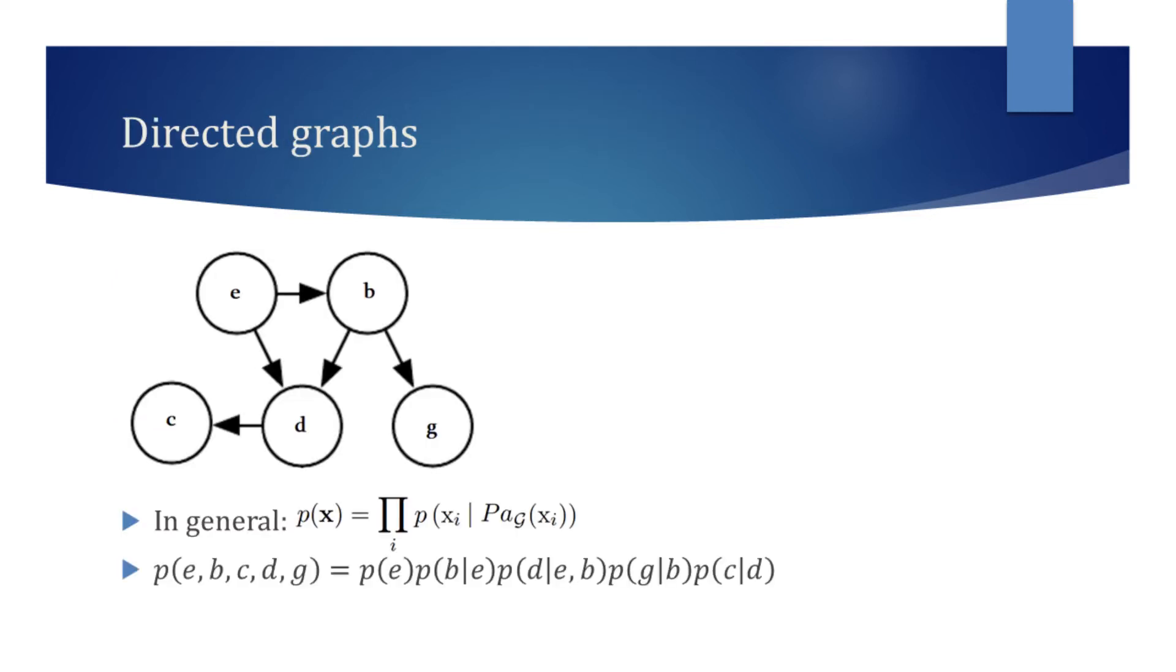You can now see the directed model for the random variables e, b, c, d, and g. It is called directed because the nodes are connected using arrows. These graphs represent factorizations into conditional probability distributions.